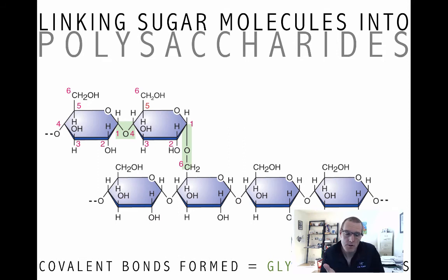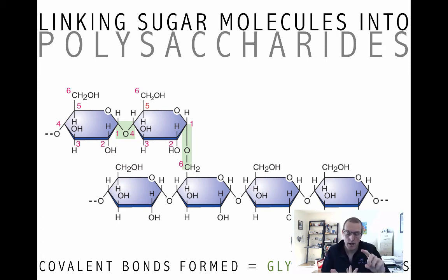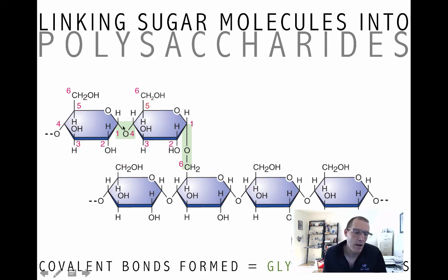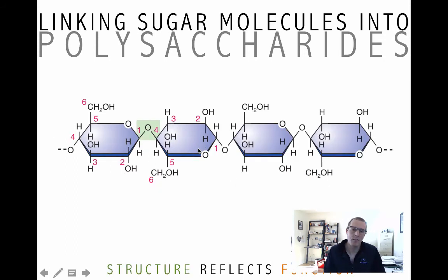So we've got: the monomer is glucose; condensation chemistry is used to build up the polymer — that's a polysaccharide; hydrolysis is used to break it down; we'll talk about structure-function relationships in a moment; and lastly, you form these glycosidic bonds — a 1-4 glycosidic bond here and a 1-6 glycosidic bond here.